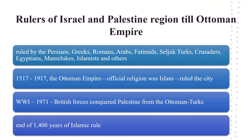The region of modern-day Israel was conquered and ruled for the next several centuries by various groups, including the Persians, Greeks, Romans, Arabs, Fatimids, Saljuk Turks, Crusaders, Egyptians, Mamelukes, Islamists and others. Between 1517 and 1917, the Ottoman Empire, whose official religion was Islam, ruled the city.